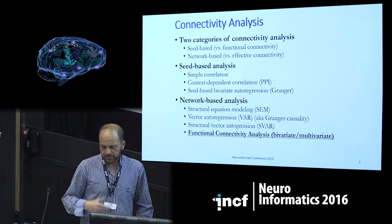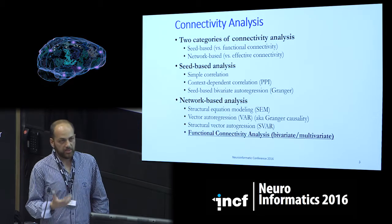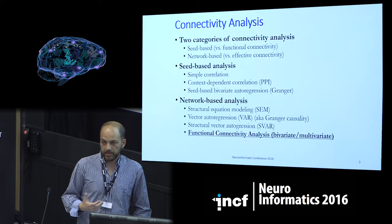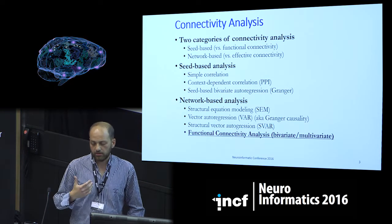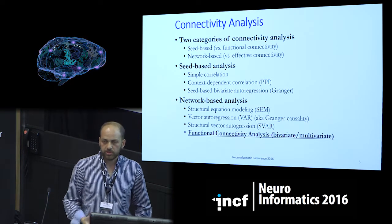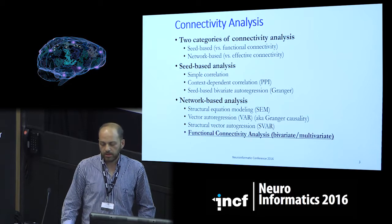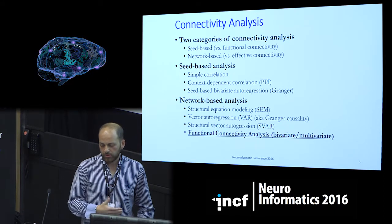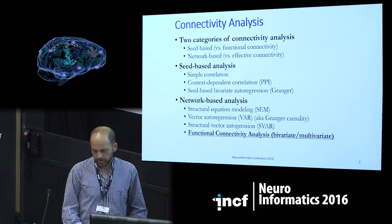There are many types of connectivity analysis: seed-based, particularly based on fMRI; network-based using DCM or structural equation modeling, or structural vector regression. But my approach would be functional connectivity, bivariate, using symbolic transfer entropy.